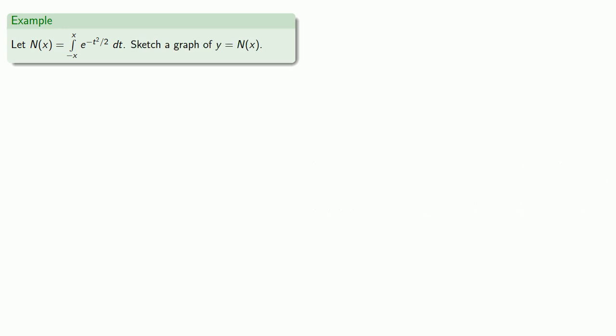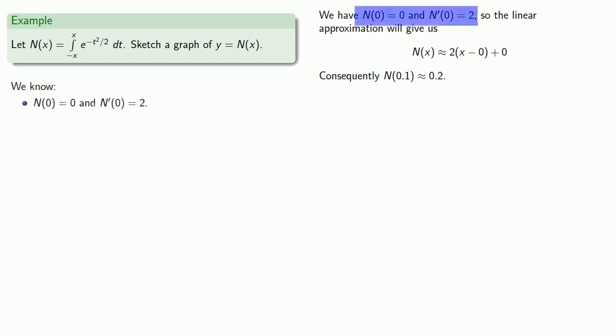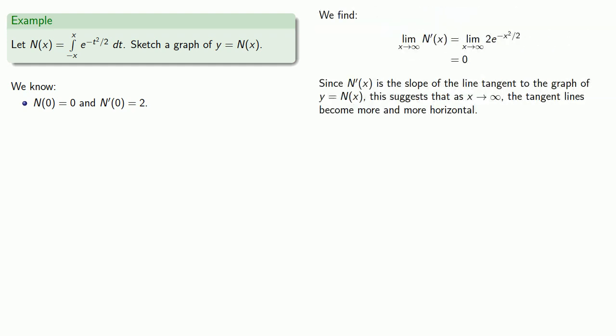So let's put together everything we know and everything we can determine and see if we can try to sketch a graph of y equals n of x. So first, remember we already found that n of 0 equals 0, and n prime of 0 is equal to 2. We also found that as x goes to infinity, n prime of x goes to 0.